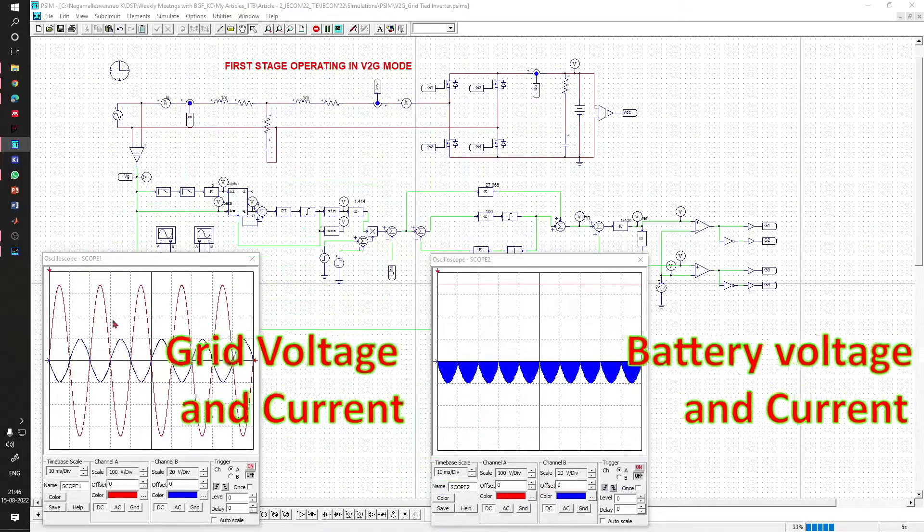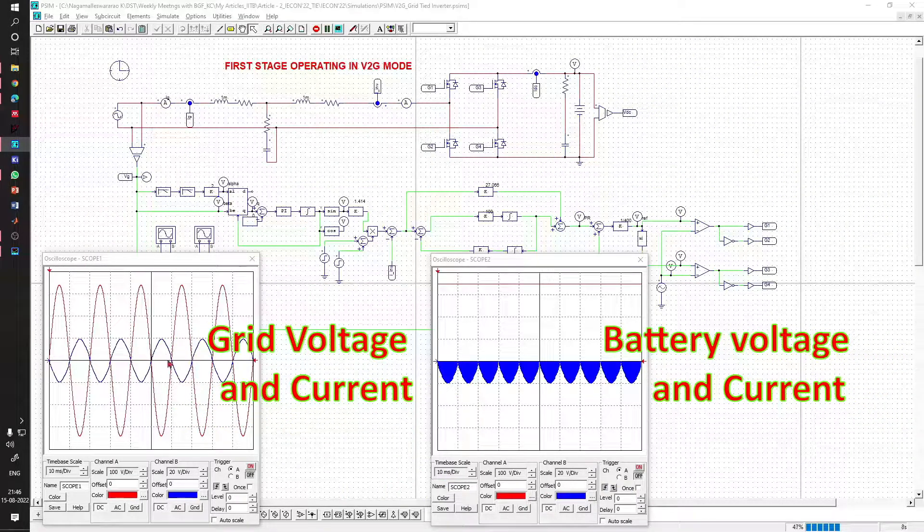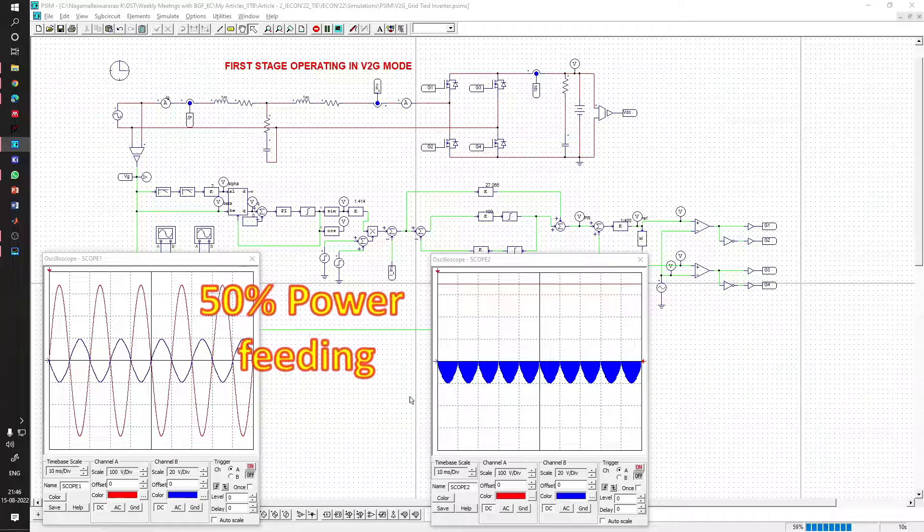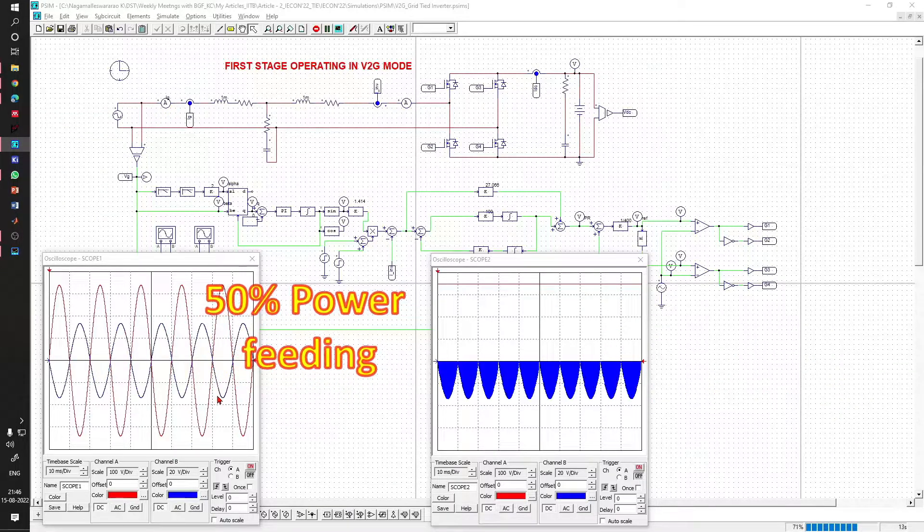Vehicle-to-grid operation is shown here. Three levels of power is fed to the grid and its dynamic response is observed.